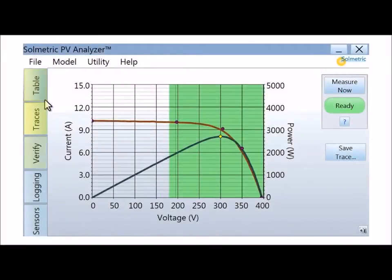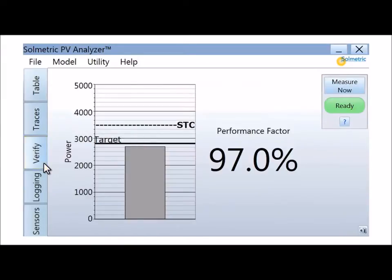The results can be viewed in various formats. The verify tab shows a simple percentage value that represents the measured power output as a percentage of the power predicted by the performance model. This percentage is called the performance factor and it provides a quick and simple method of performance verification.